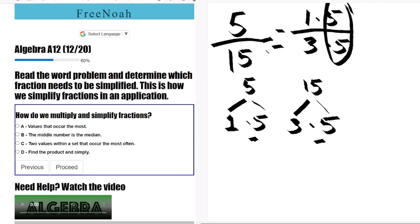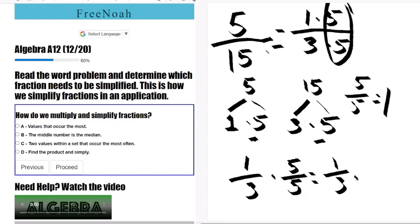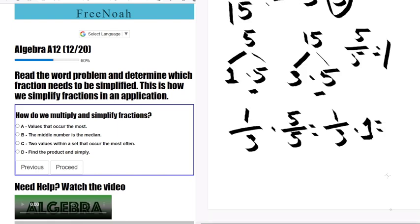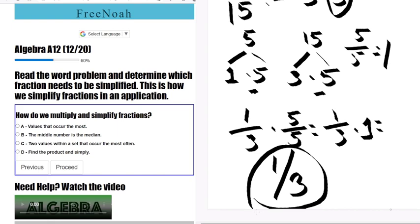Now this 5 over 5 here is c over c, which will be equal to 1. So now we have 1 over 3 times 5 over 5, which equals 1 over 3 times 1, ultimately giving us 1 over 3. That is the lowest term.